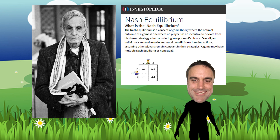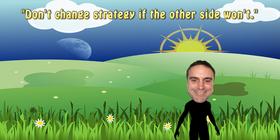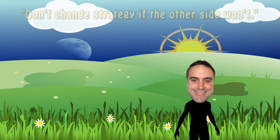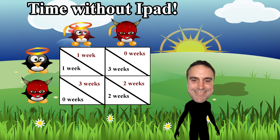Nash developed the idea now known as the Nash Equilibrium — a concept of game theory where the optimal outcome of a game is one where no player has an incentive to deviate from his chosen strategy after considering an opponent's choice. Overall, an individual can receive no incremental benefit from changing actions, assuming the other players remain constant in their strategies. In other words, you'd be dumb to change strategies. If we look at the example from the intro, we can see that if both children blame each other, this strategic outcome represents Nash Equilibrium.